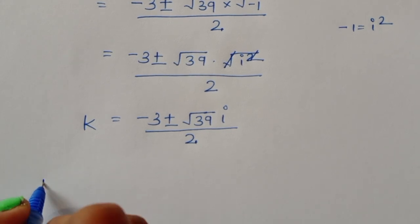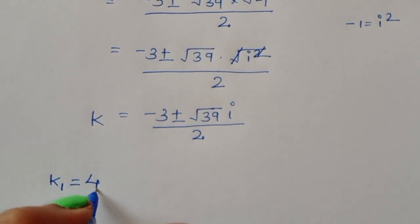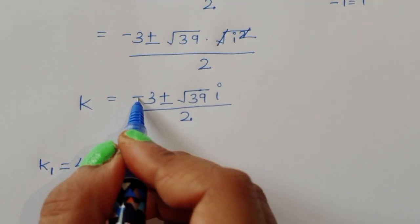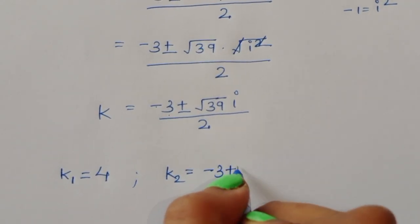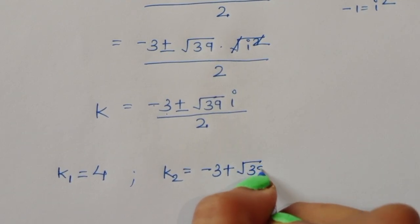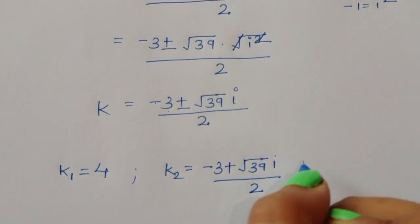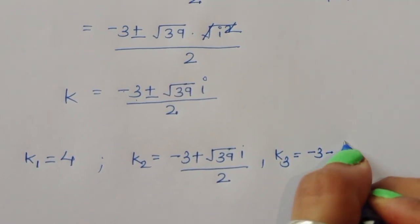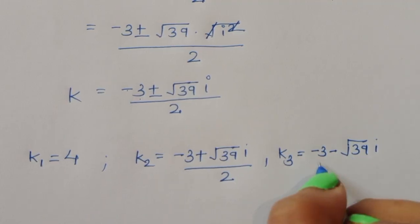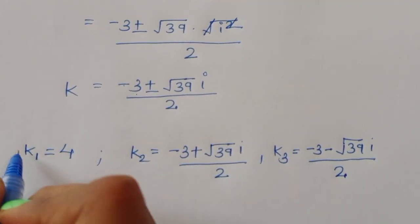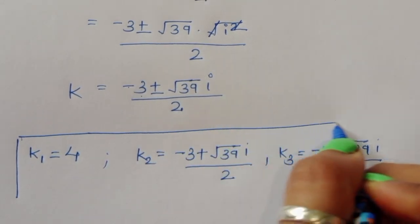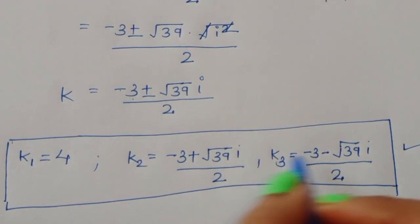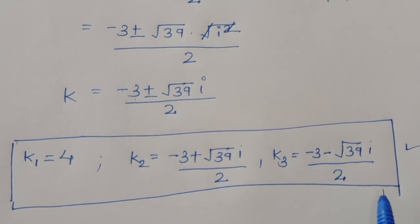So the final values of k are: k1 equals 4 (the real solution from the first equation), k2 equals (minus 3 plus square root of 39 i) divided by 2, and k3 equals (minus 3 minus square root of 39 i) divided by 2. Here k1 is the real solution and k2, k3 are imaginary or complex solutions.